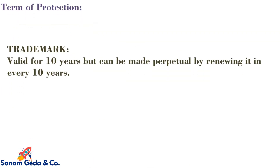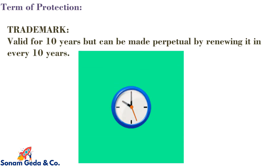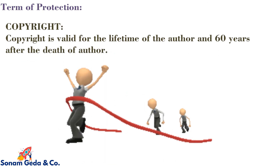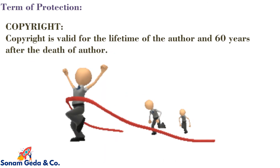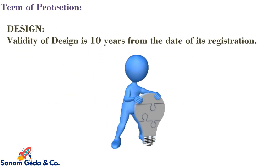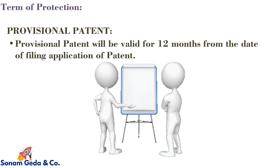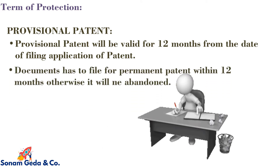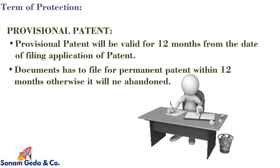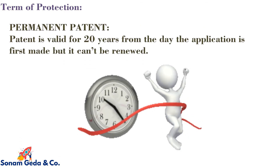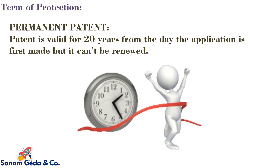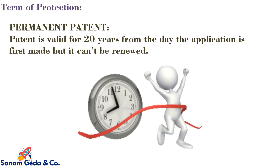Term of protection: Trademark is valid for 10 years but can be made perpetual by renewing it every 10 years. Copyright is valid for the lifetime of the author and 60 years after the death of the author. In case of design, validity is 10 years from the date of its registration. In case of provisional patent, it is valid for 12 months from the date of filing; a document must be filed for permanent patent within 12 months otherwise it will be abandoned. In case of permanent patent, the patent is valid for 20 years from the day the application is first made but it cannot be renewed.